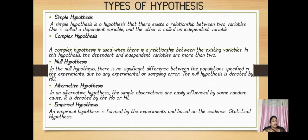Null hypothesis: it is a significant difference between the population specified in the experiment due to any experimental or sampling error. The null hypothesis is denoted by H0. Alternative hypothesis: the simple observations are easily influenced by some random cause. It is denoted by HA or H1. Empirical hypothesis: an empirical hypothesis is formed by experiments and based on the evidence. Statistical hypothesis.